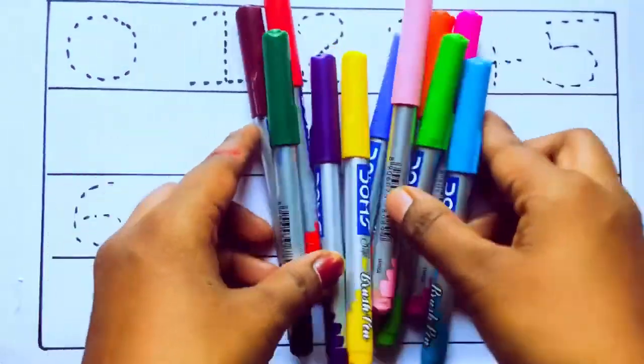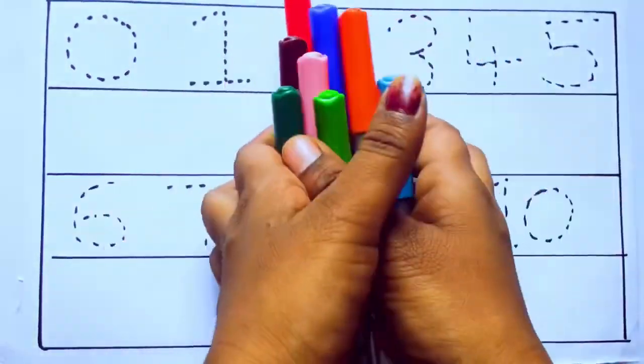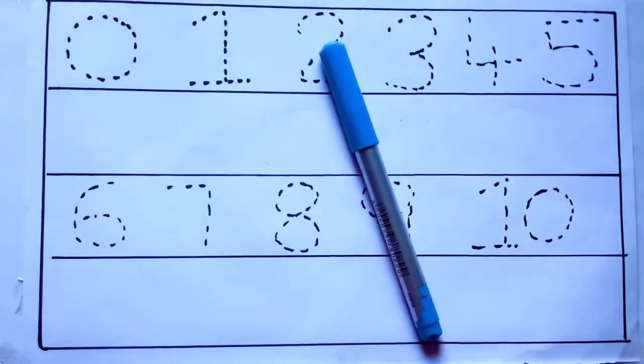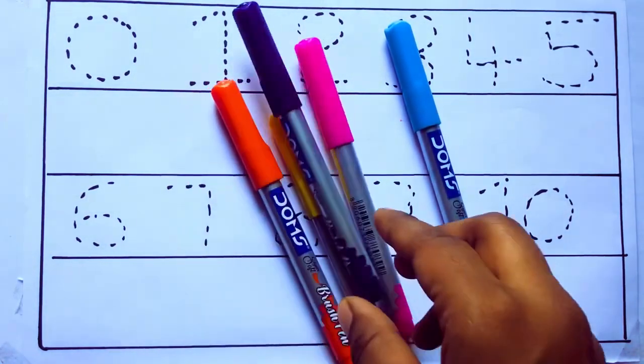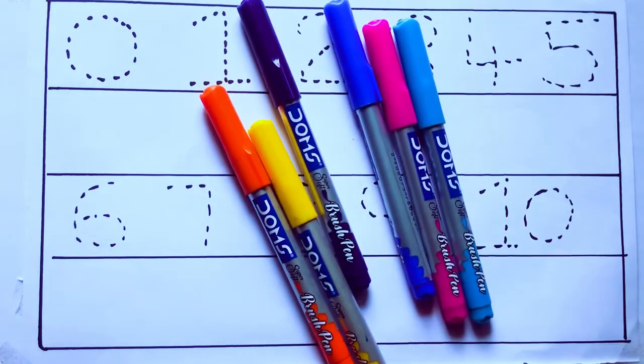Let's learn some colors. These are all the color pencils. Let's learn the names. Sky blue color, pink color, yellow color, orange color, violet color, blue color.